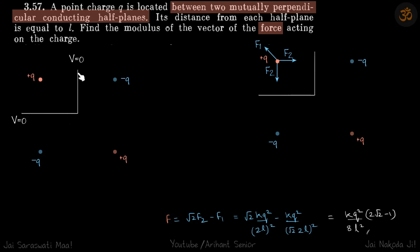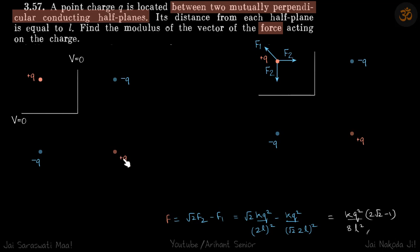And if you take any point on this plane, then again the potential because of these two charges will be zero. So the potential due to the remaining charge needs to be countered, and that will happen again if you put a plus q charge here.